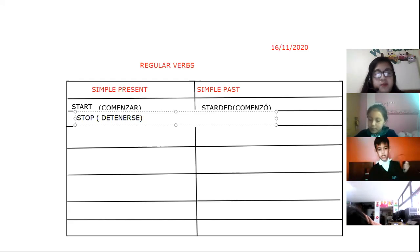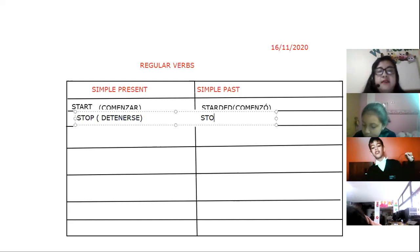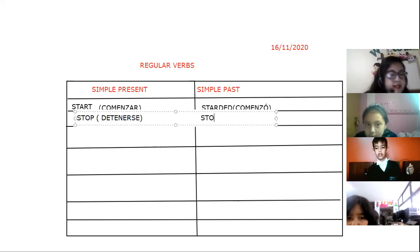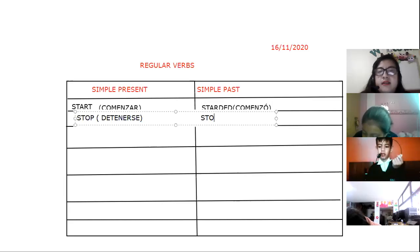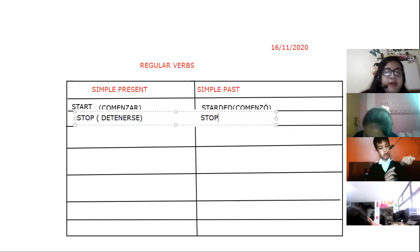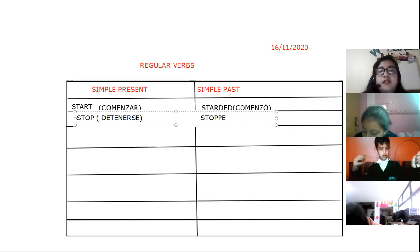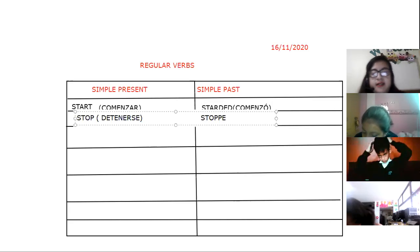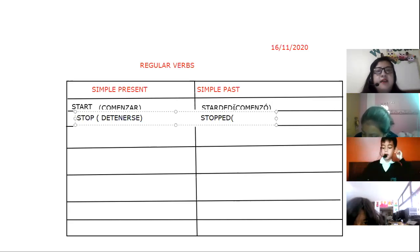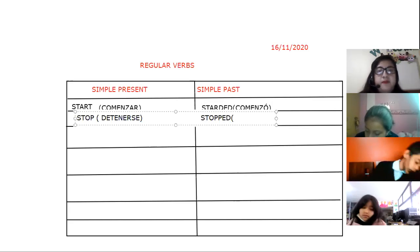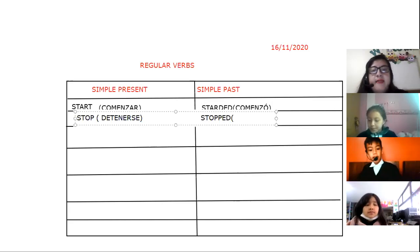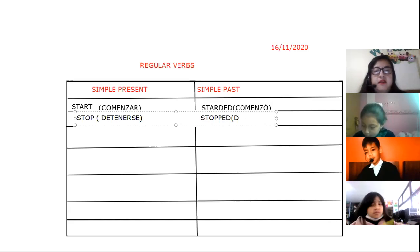Pay attention to this verb. You add double P: stopped — usted va a poner doble P. Stopped is like this — stop, stopped. The meaning is detenerse, and in the past: se detuvo.